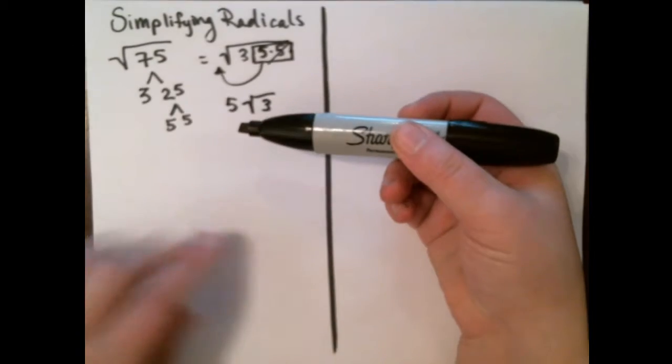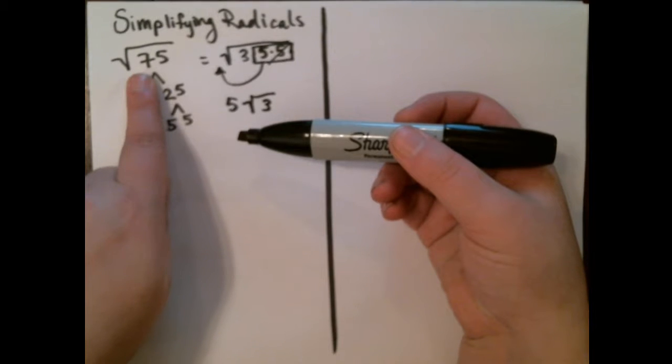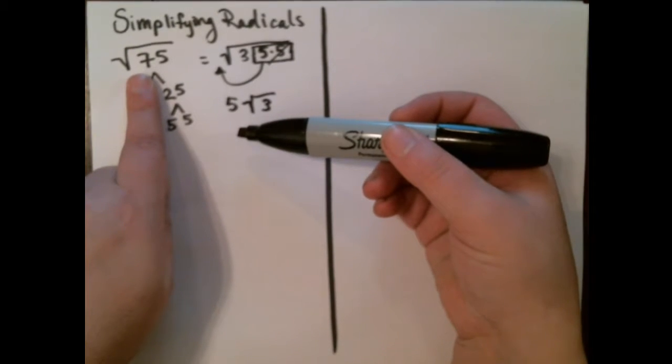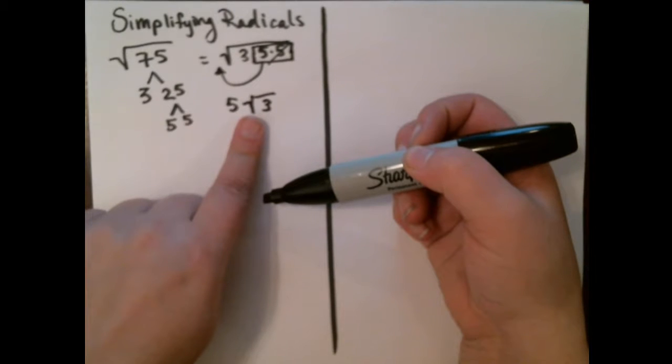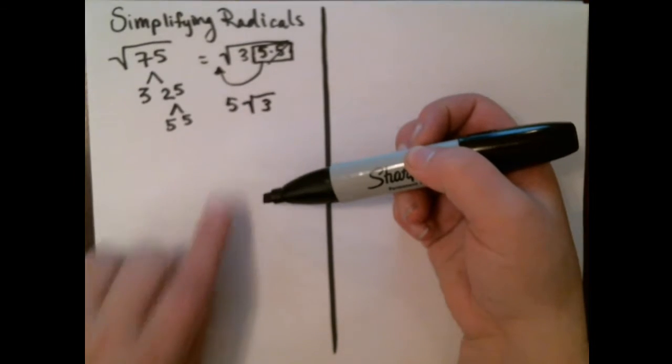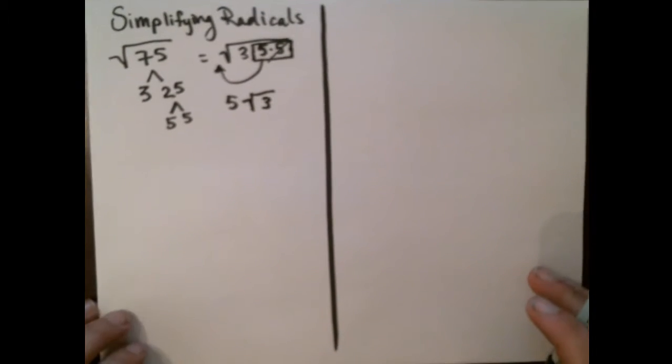You can always check with a calculator. If you put this in, the square root of 75, you're going to get a decimal. When you put this in, you should get the exact same decimal. Let's do a couple more easy ones.